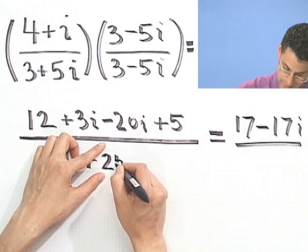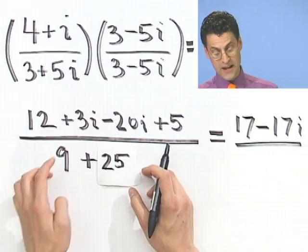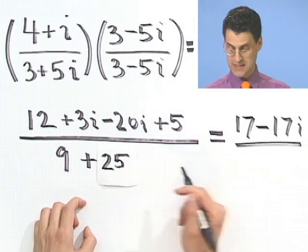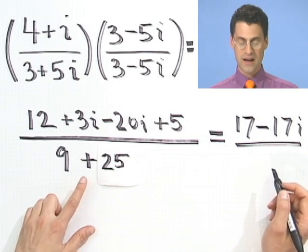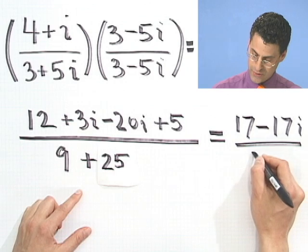Boy. But it's good for you to see that everyone makes mistakes, especially me. And I think the top, though, is fine. And then if I take 9 and I add 25, I get something like 34.